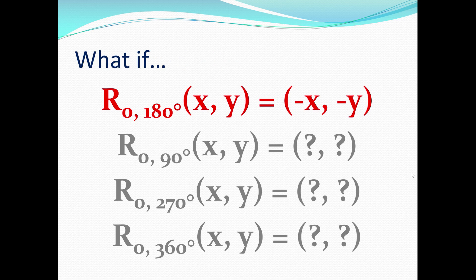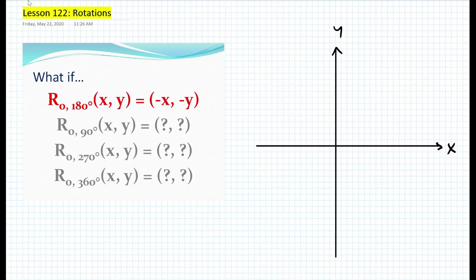What if we have different angles? For example, what if we rotate (x,y) over the origin by 90 degrees, or 270 degrees, or 360 degrees? The best way to figure this out is with an example. Let's pick a point — let's say P = (3,4). We construct a radius and move counterclockwise by 90 degrees. If you measure the distances on graph paper, we end up at P prime = (-4, 3). So it seems like we swap the x and y and negate the x value after the swap.